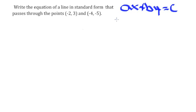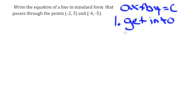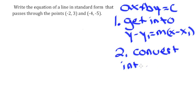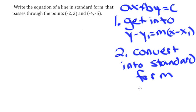The first step you're going to want to do — this is going to seem a little weird — is to get the equation into point-slope form: y minus y1 equals m times x minus x1. Then our second step is going to be to convert the equation into standard form. So let's go ahead and take a look.